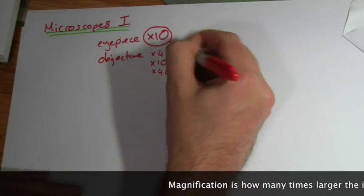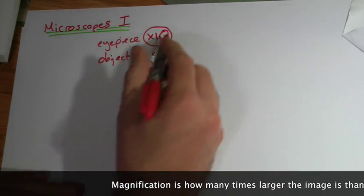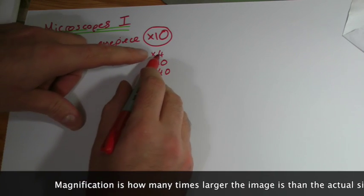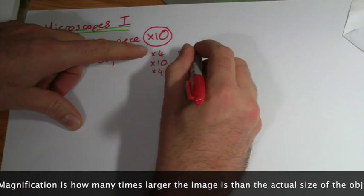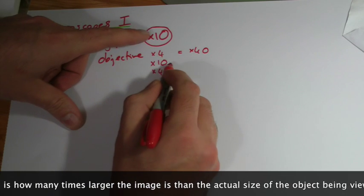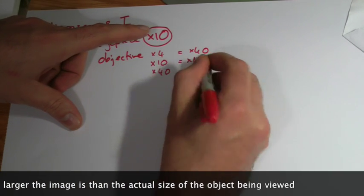All you would do to work out your overall magnification is multiply the two numbers together. So if you're looking down that objective lens, it'd be 4 times 10, so the overall magnification would be 40. If you're looking through that one, it'd be 10 times 10, so the overall magnification would be 100.